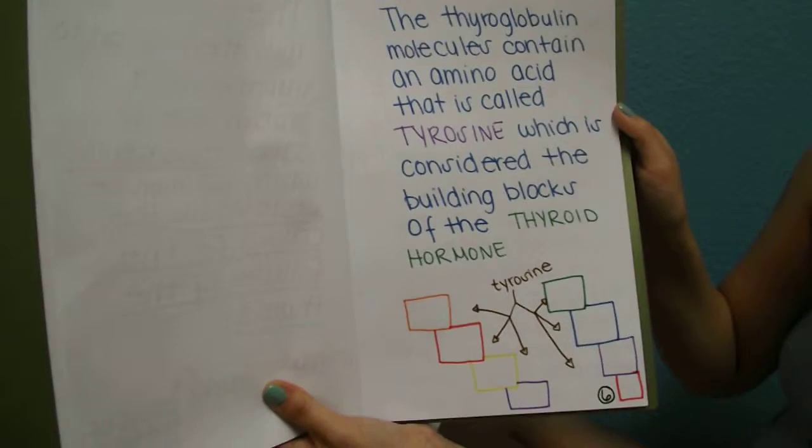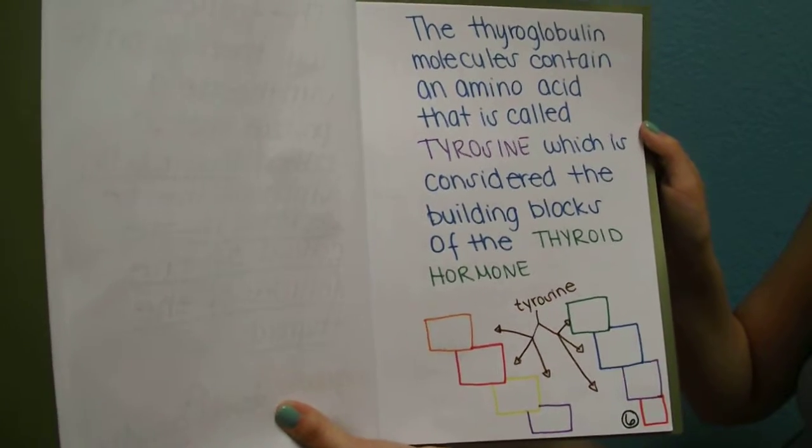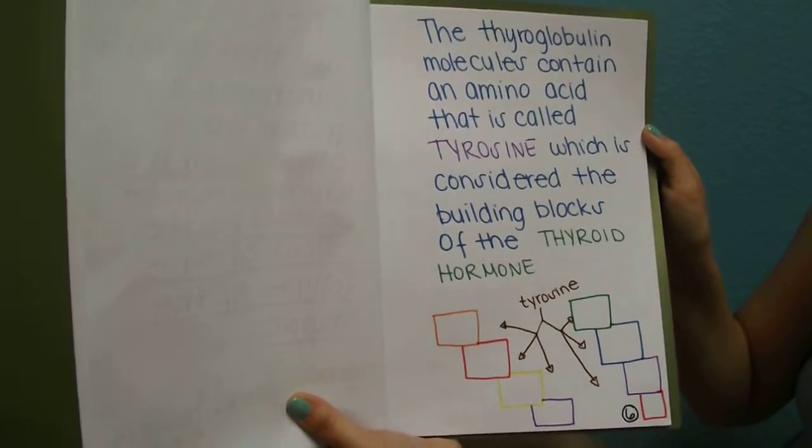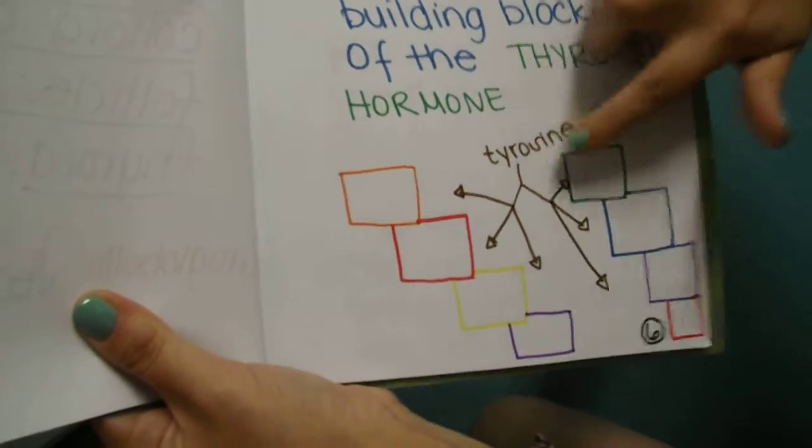The thyroglobulin molecules contain an amino acid that is called tyrosine, which is considered the building blocks of the thyroid hormone. So here I have examples of building blocks, which all come up to tyrosine.